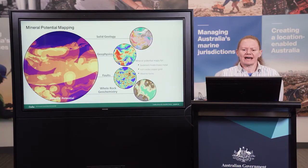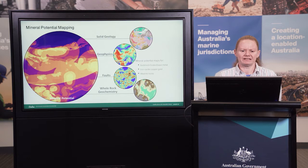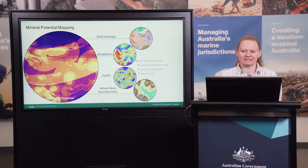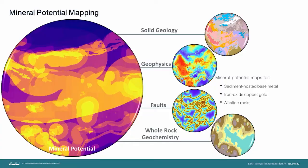Given all of the data available and the many decades of collective mineral systems expertise, we can start to synthesise all of this into mineral potential mapping studies that allow us to reduce the exploration search space for different mineral systems in Australia. Through evaluating relationships between different datasets and non-mineralisation relating to the mineral systems of interest, we can start integrating the vast volumes of data in order to produce mineral potential maps that are both geologically and mathematically robust.